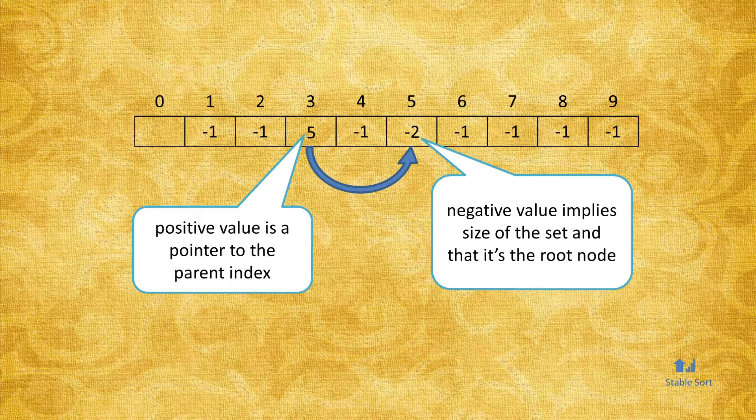Except we'll store the negative value, negative 2 in this case, to be able to tell apart a group size versus a reference to some other index. So a positive value is like a pointer to the parent index, while a negative value signifies the size of the group.